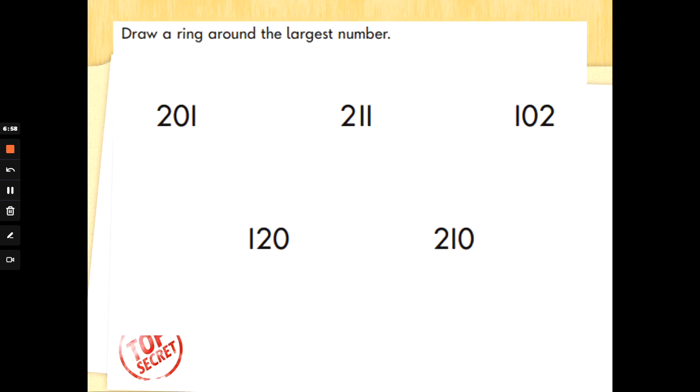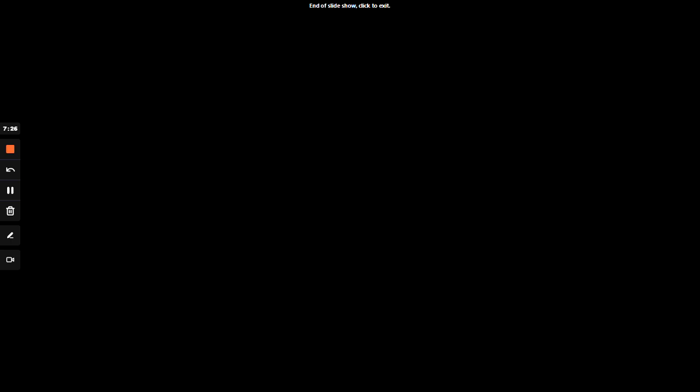Draw a ring around the largest number. So we've got hundreds, tens, and ones here. So we've got 201, 211, 102, 120, and 210. Which is the largest number? There is 211, because it's got 200 and it's got the most tens and ones. Okay, well done if you spotted that.